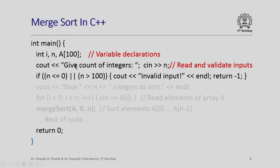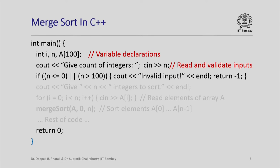Here is what a C++ implementation of merge sort might look like. In the main function I have used an integer array 'a' of size 100, so I can read at most 100 integers. I ask the user for the count of integers to sort, read that number, and perform input validation — checking whether the count is less than or equal to 0 or greater than 100. If so, I print an error message and return -1, so the operating system can detect the unexpected execution.